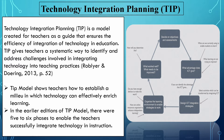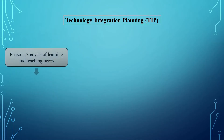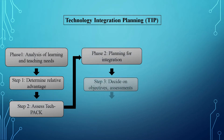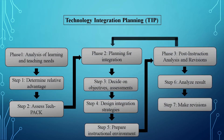In the earlier editions of the TIP model, there were five to six phases to enable teachers to successfully integrate technology in instruction. Phase 1: Analysis of Learning and Teaching Needs — Step 1: Determine Relative Advantage; Step 2: Assess TechPAC. Phase 2: Planning for Integration — Step 3: Decide on Objectives and Assessments; Step 4: Design Integration Strategies; Step 5: Prepare Instructional Environment. Phase 3: Post Instruction Analysis and Revisions — Step 6: Analyze Results; Step 7: Make Revisions.